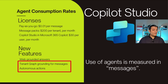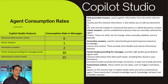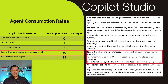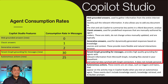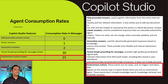The last two features are the ones that just got changed. We also got details about what these consumption rates are going to be. The tenant graph grounding for messages — meaning any time you get relevant information from Microsoft 365, including files stored in SharePoint — consumed 30 messages. And any time you performed autonomous actions, that consumed 25 messages.